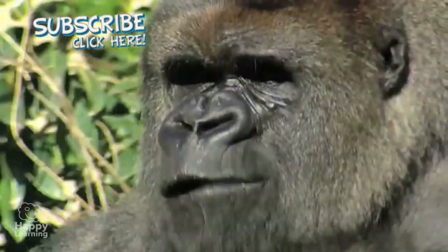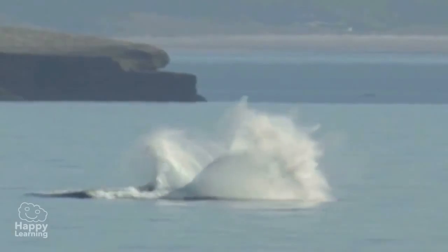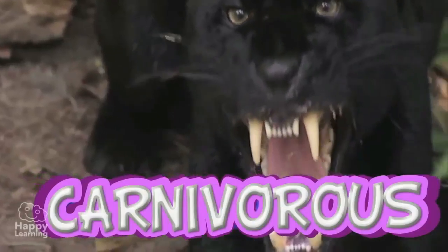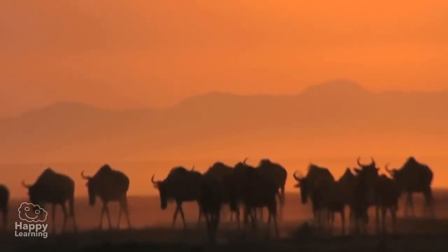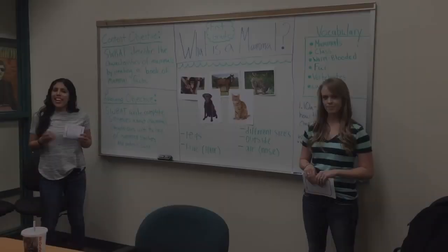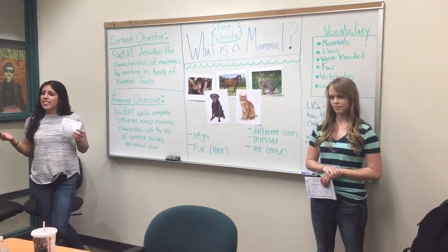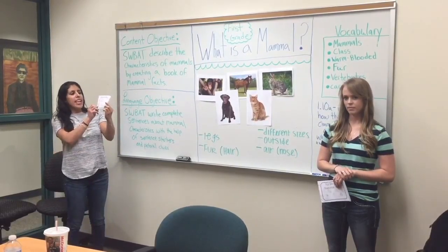Now let's review the video one more time. Mammals are viviparous, and in the early stages of life they feed on milk from their mother's breasts. They have lips and breathe with their lungs. Their body temperature does not depend on the environment they're in, and depending on their food sources, they may be herbivores, carnivores, or omnivores. Goodbye for now, everybody, and don't forget to subscribe to Happy Learning!